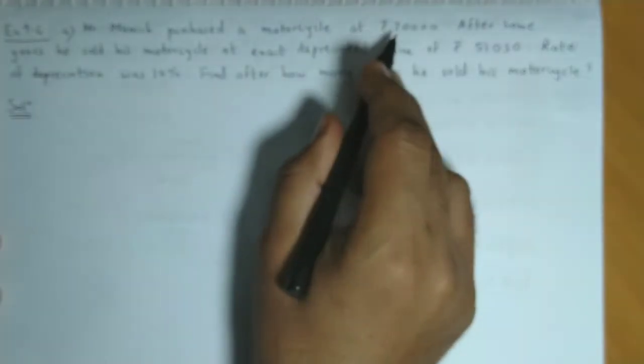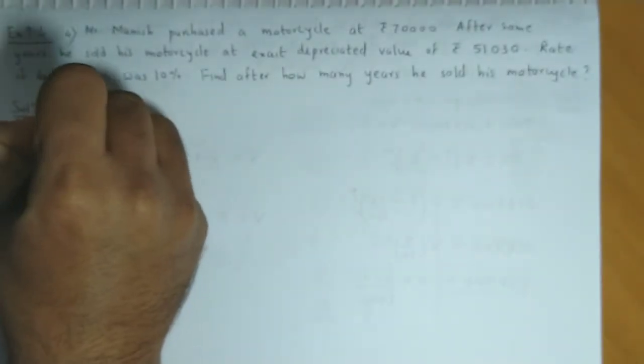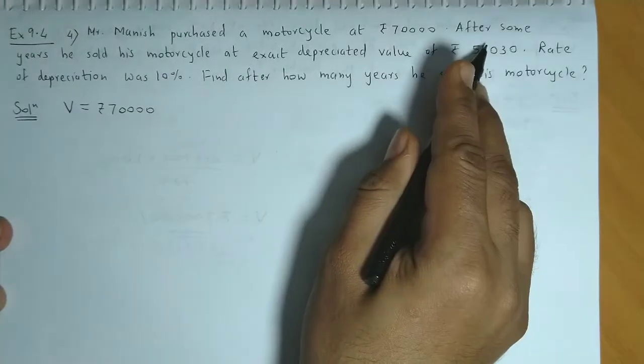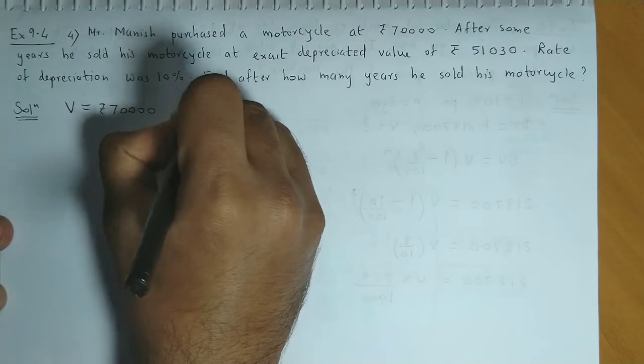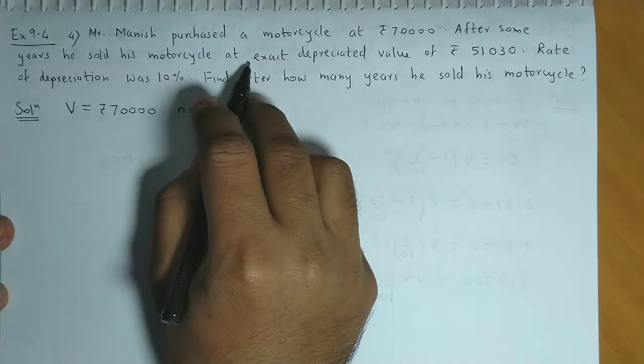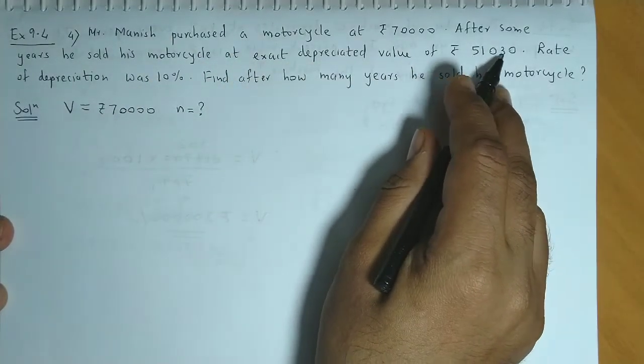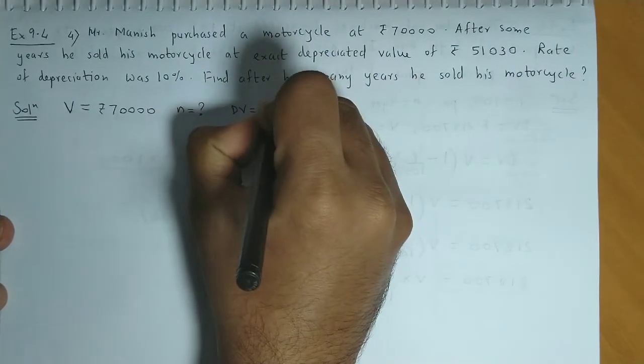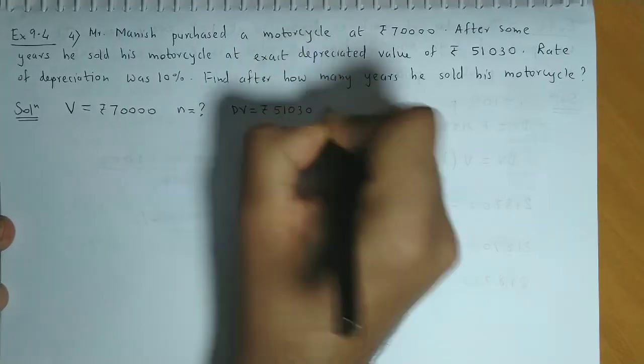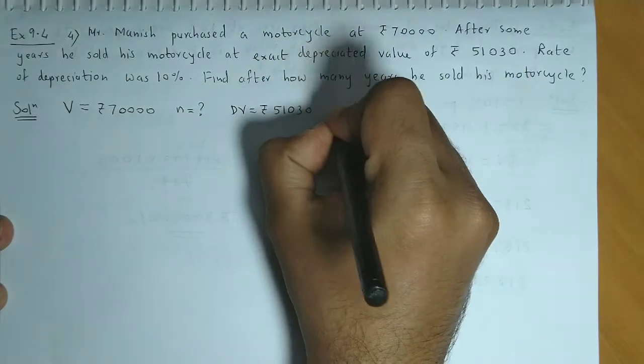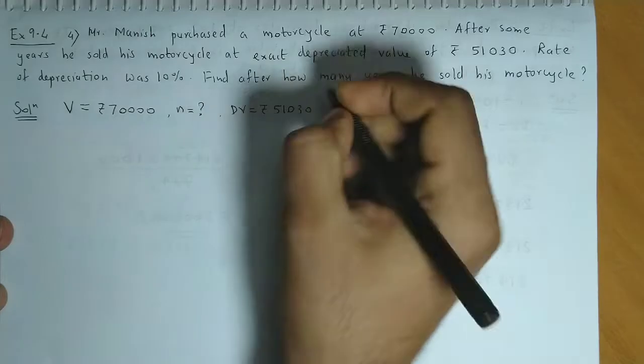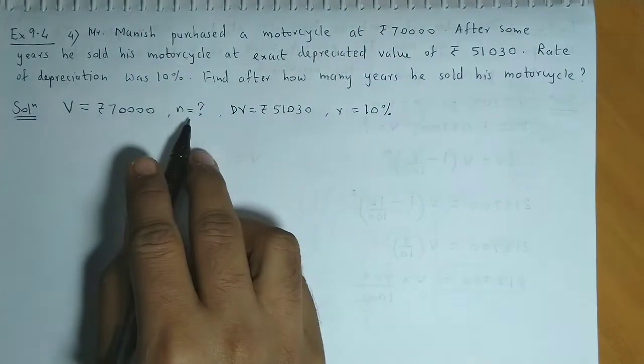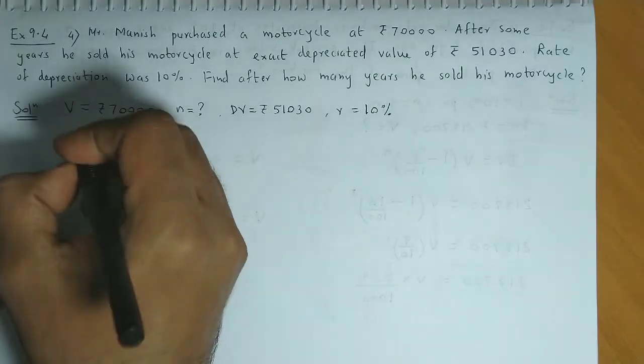Now, the purchase price of the motorcycle is Rs. 70,000. V value is Rs. 70,000. After some years, he sold his motorcycle at a depreciated value of 51,030. Malabh, yeh hai DV ki value. So DV, that is depreciated value is 51,030 and rate of depreciation, yani jo R hai, wo hai 10%. Find after how many years he sold his motorcycle? Yani, hame N ki value obtain karni hai.